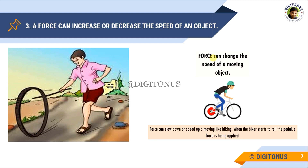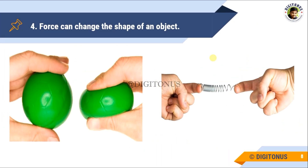A force can change the shape of an object. For example, if you apply force on a balloon, its shape will change. You can see in the figure that there is a ball, and when we press the ball by hand, the shape of the ball will change. You can also see in another figure: there is a spring, and when we stretch the spring — when we apply force on the spring — the shape of the spring is changed. So it is clear from these examples that force can change the shape of an object.